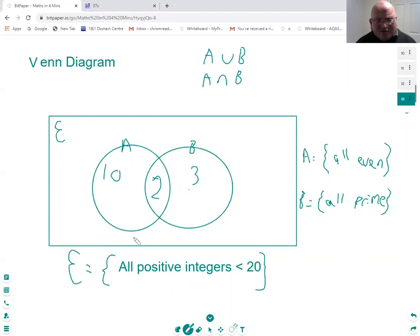Let me think of another number that might not be in either of these two sets, 15. 15 isn't prime, it's not even, but it is less than 20, so we'd write 15 out there. So, I've not completed that diagram.